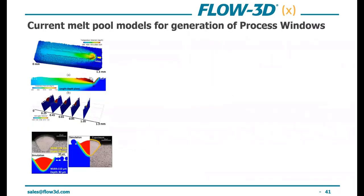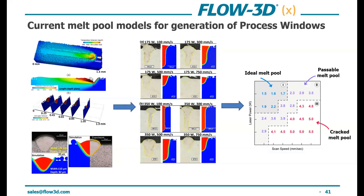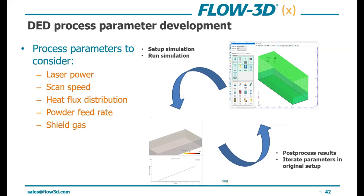The current method for generating process windows is to run a single scan track and validate the experimental model. As you can see in the side-by-side comparison, the experimental data versus the Flow3D results shows superb correlation. Once validated, we vary parameters and build the process matrix based on different powers and scan speeds to identify an ideal melt pool with the correct characteristics. Using Flow3DX, we can now deploy design of experiment studies and automate that entire process — even the post-processing of results can be automated. This is a huge game changer.